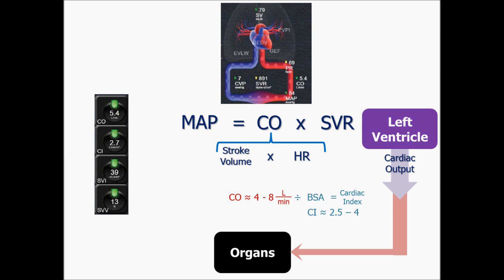Cardiac index is measured in liters per minute per meter squared because it's divided by body surface area. And that's going to be another parameter that you can monitor on the hemodynamic monitor.